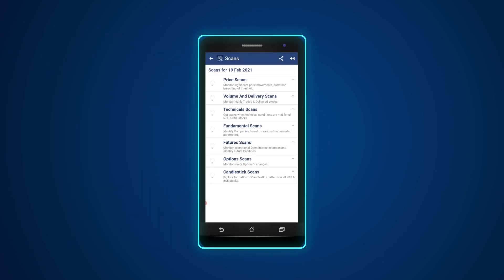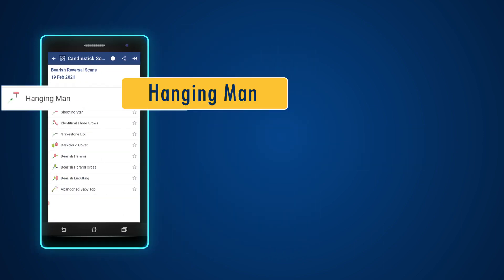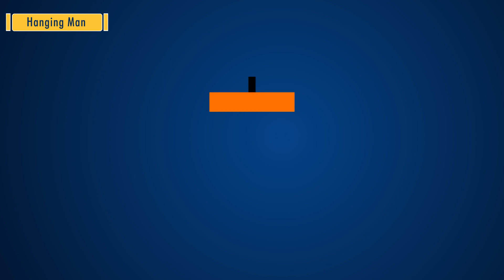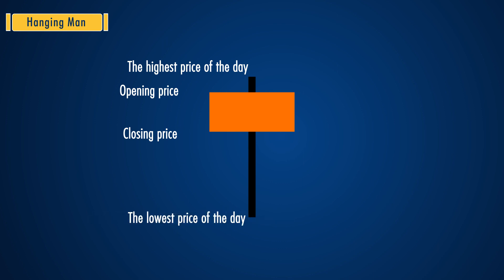This video will help you understand the Hanging Man Candlestick Pattern in Stockage. This candlestick pattern is a single candlestick pattern that is formed at the end of an uptrend. It is a bearish reversal pattern that signals that the uptrend is going to end. This also indicates that the bulls have lost their strength in moving the prices up and the bears are back in the market.